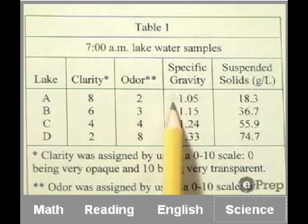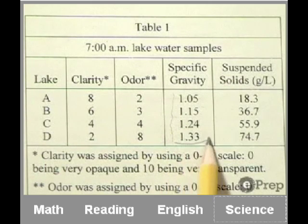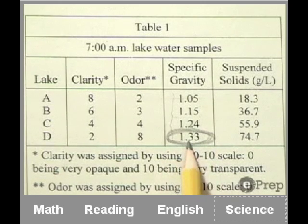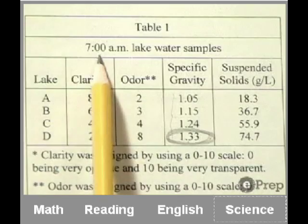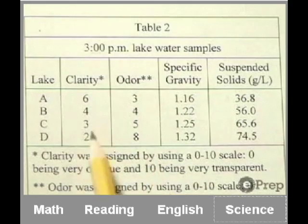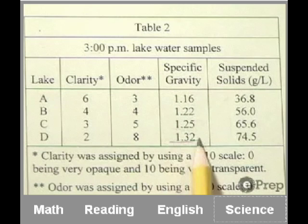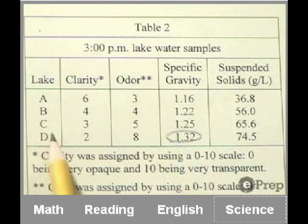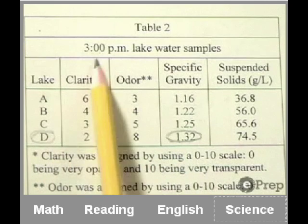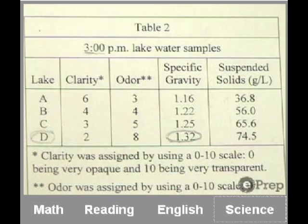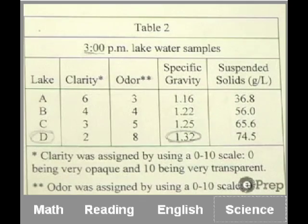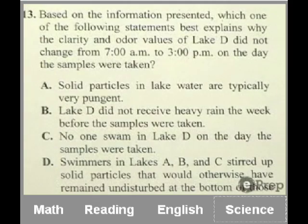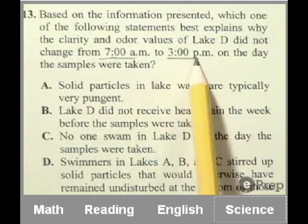So if the specific gravity of a lake goes above 1.3, it is considered unhealthy and swimming in that lake is forbidden by local authorities. So let's take a look at table one. And you'll see when you look down the specific gravity column that lake D is above that 1.3. So nobody was allowed to swim in lake D at least at 7 o'clock in the morning they weren't. And if you take a look at table two and look down specific gravity, you see again, lake D is the only one that has a specific gravity value of above 1.3, which means really, probably nobody could swim in lake D during the day that day.